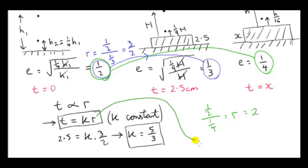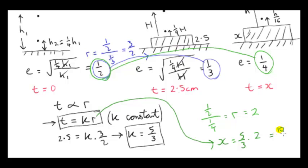Now we just use our formula. When the thickness is x, R is 2 and k is 5 thirds. So our answer is 10 thirds, which is 3 and one third centimetres.